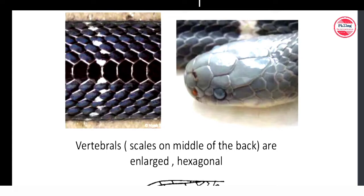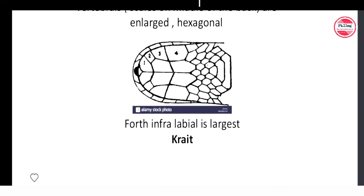You can also observe the vertebral scales on the middle of the back — if they are the largest and hexagonal in shape (six-cornered, like a honeycomb structure), that is another identification tool for a poisonous snake. Additionally, if the fourth infralabial scale is the largest, that confirms it is a krait.